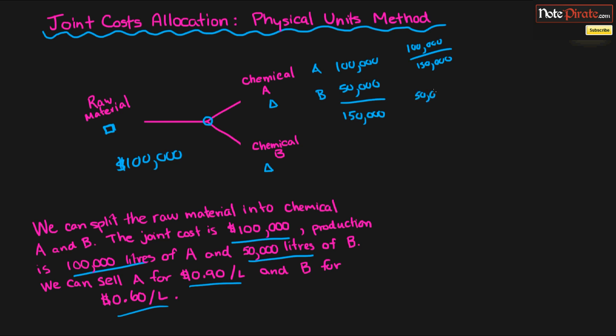And we're going to take B, which is 50,000 liters, divided by the total liters. And that way, each will give us a percent. So chemical A will take, that will be 66.67%, while chemical B will be 33.33%. So 33.33 of the 100,000 is going to go to chemical B, and the opposite for chemical A.